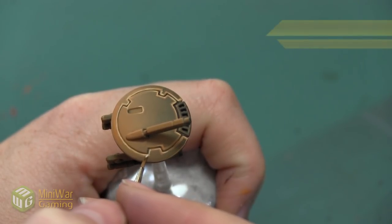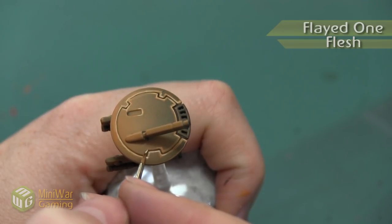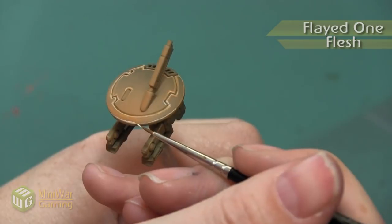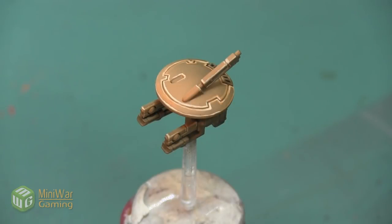After I finished with that 50-50 mixture, I want to go back with pure Flayed One Flesh, exaggerating the highlight on those corners and that front arc. Here's the drone after we finish that Flayed One Flesh highlight.